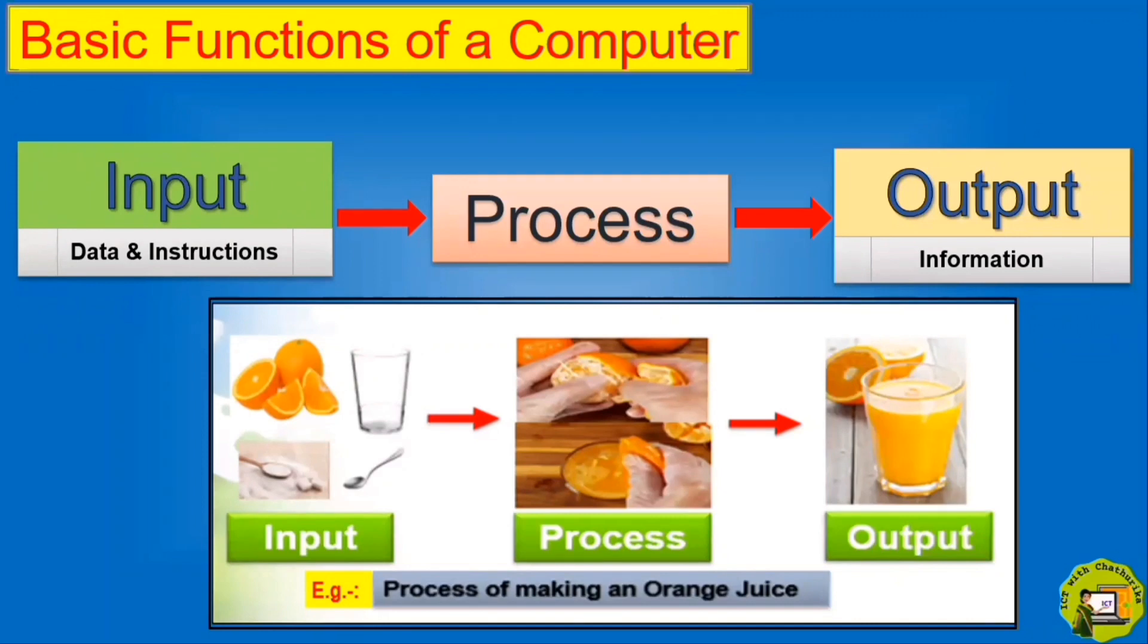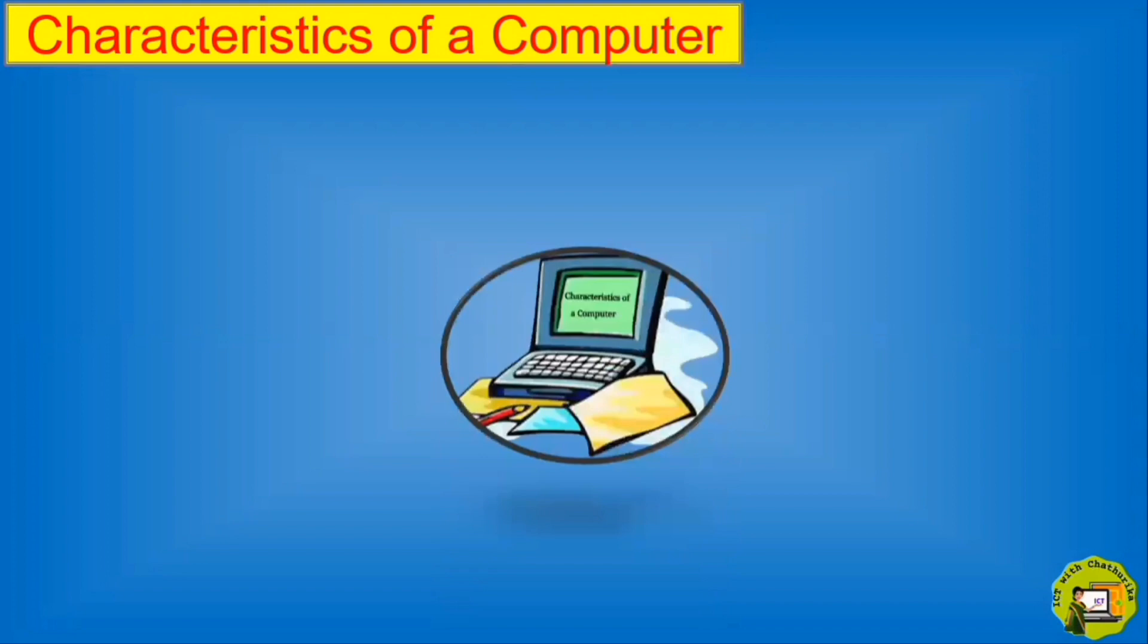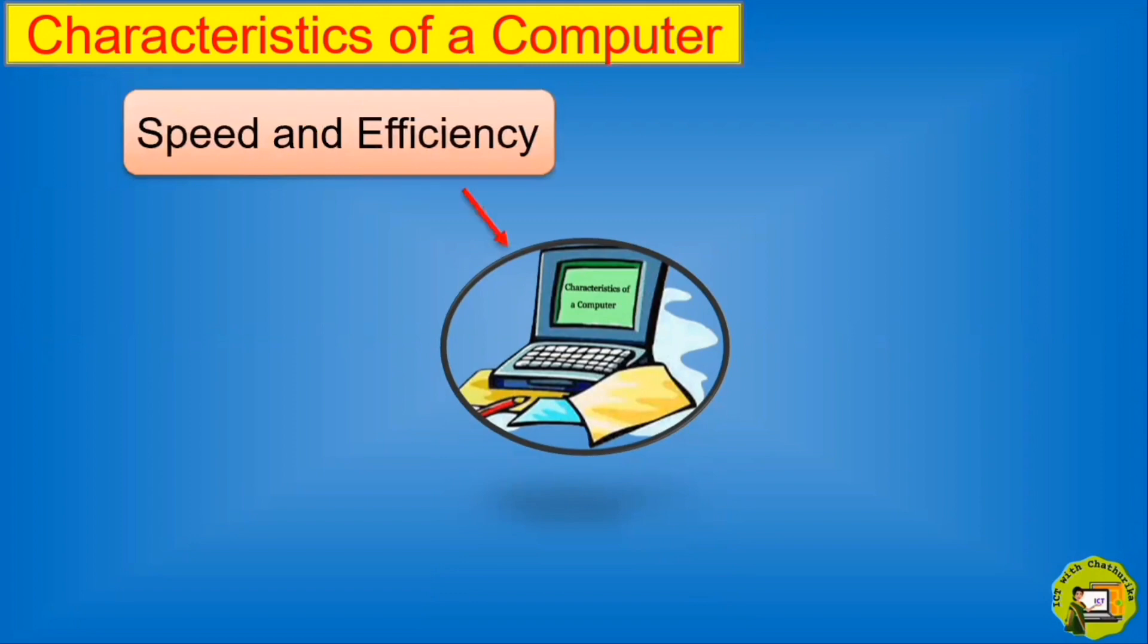Let's go to the second topic of this lesson: Characteristics of a computer. Computer has so many characteristics. First one is speed and efficiency. Computer can perform tasks very fast. I already told you this word efficiency. This is one of the main characteristics of a computer.